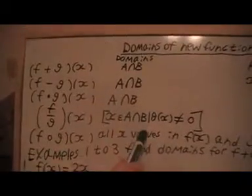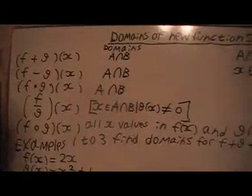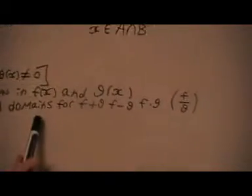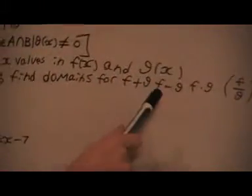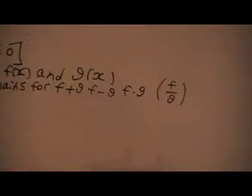So here's the rules, and this is what we want to do for the first three examples: we want to find the domains for F plus G, F minus G, F times G, and F over G.